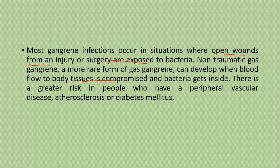Non-traumatic gas gangrene develops in the body due to compromised blood circulation in a particular tissue site, where oxygen supply is reduced and bacteria thrive. There is a great risk in people who have peripheral vascular disease, atherosclerosis, and diabetes.